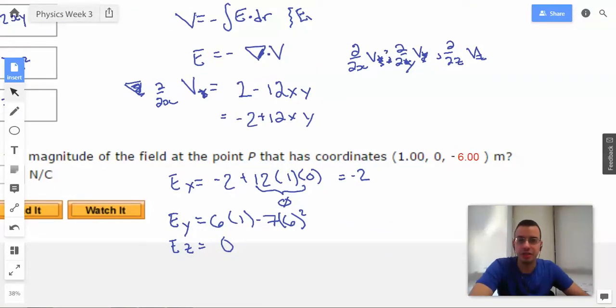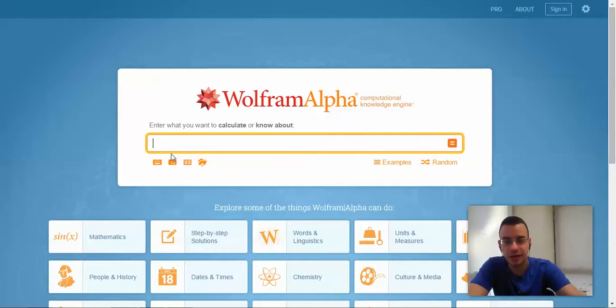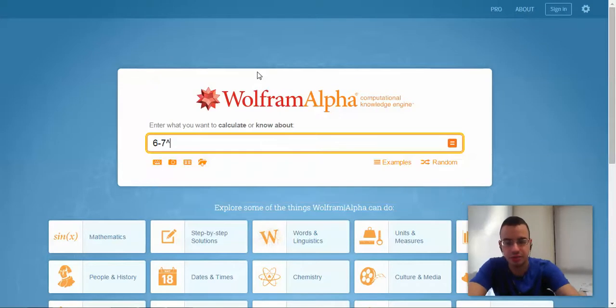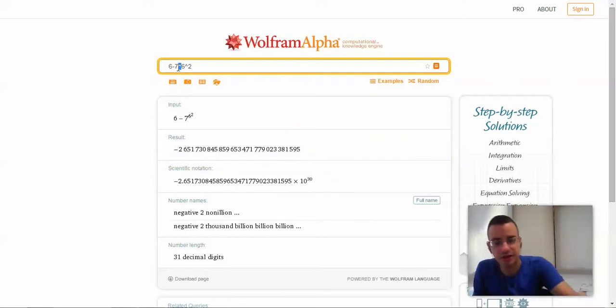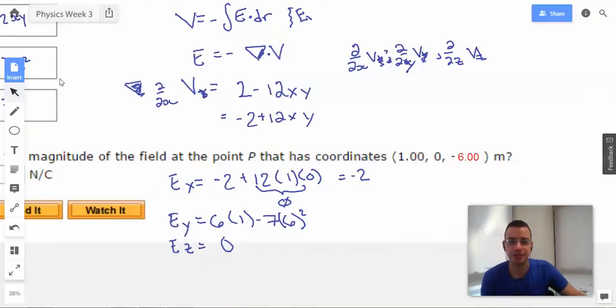So what we're going to have is negative 2 squared plus... I'm going to do this slightly differently. I'm just going to find this part: 6 minus 7 times 6 squared. And that gives us negative 246. So now we're going to square all these: square 0, square negative 2, and square negative 246, then take the square root to find the hypotenuse.